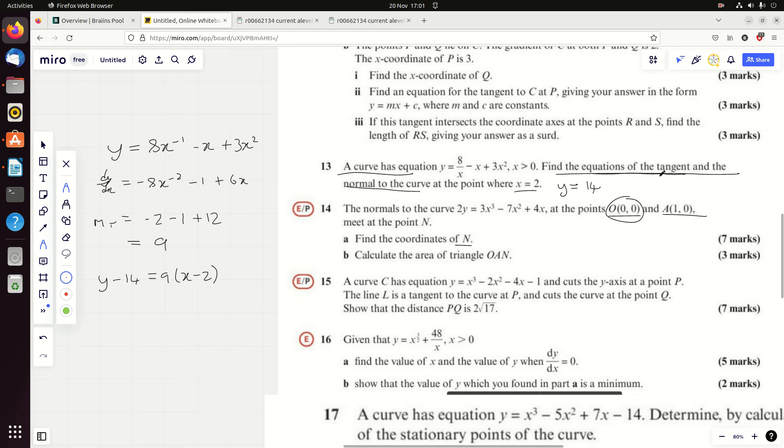And so now I can do y minus y1 is m times x minus x1. As far as I'm concerned, I've finished it. I've done what the question asked me to do, but I know they'll always tidy it up in the back of the book. So let's just check if we've got the same answer: 9x minus 18 is 14, is 9x minus 4. We'll check it in a second - so that's the tangent.